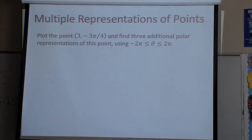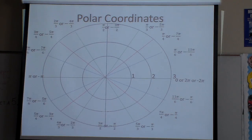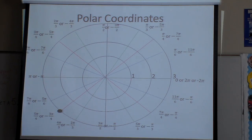Multiple representation of points. I want to find the plot to point 3, negative 3 pi over 4, so I'm going to find the three additional polar representations to this point between negative 2 pi and 2 pi. First off I need to go to my point right there — notice I have the positives and the negatives — and my point 3, negative 3 pi over 4 is right here.